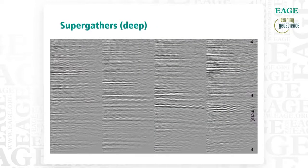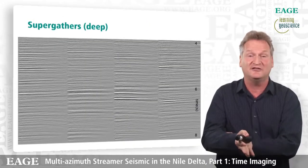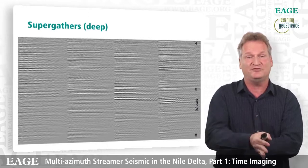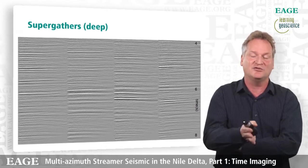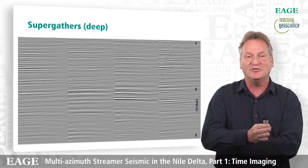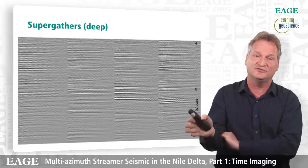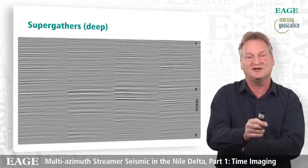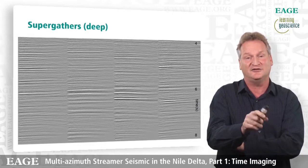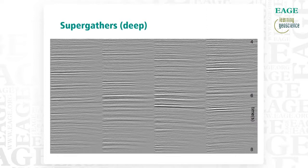Looking at some gathers deeper in the section — four to eight seconds — the gathers are 360-fold. We have 60-fold per survey, so 360 traces going into each CDP. They're sorted from small offset to large offset, and within each offset class we go from one azimuth to the next. So there are little patches from six azimuth pairs that go along with offset — you see small-scale jitter due to azimuthal variation, and longer wavelength variation as a function of offset.